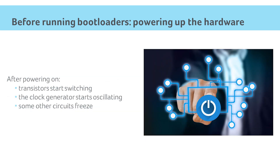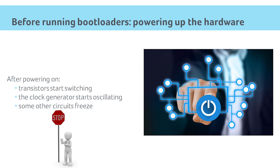But once an electrical current starts flowing through this carefully designed piece of hardware, an interesting phenomenon starts happening. The transistors start switching to a certain voltage output level, some circuits start to oscillate to generate clocks, and other circuits freeze their behavior between clock impulses. But for a very small amount of time, the hardware is unable to run any software.